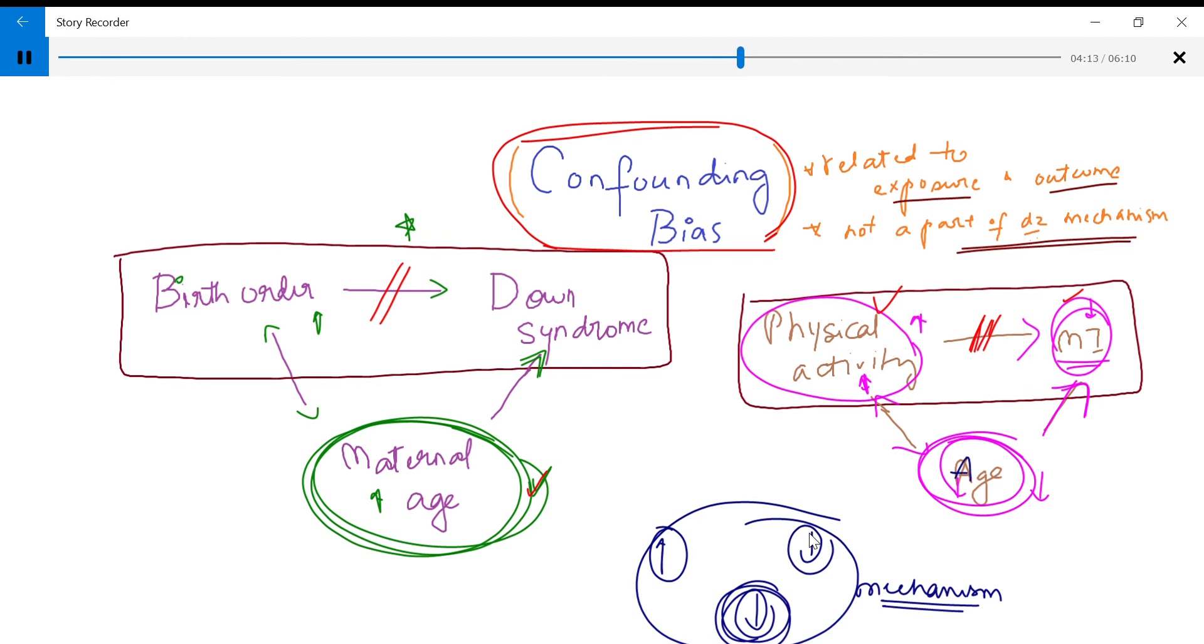So, but when it comes to age and age tends to be a very common confounding factor and to offset these confounding biases, people tend to do what we call case control studies in which you have race and age matched controls. So that you can offset the effects of a confounding bias.